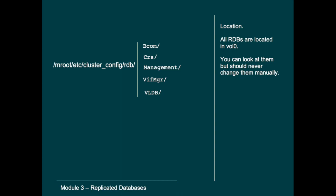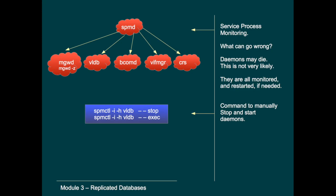The number of updates and transactions are also shown with this command. The RDB files are located in vol0 in the directory /mroot/etc/cluster/config/rdb, and each RDB has its own subdirectory with the name of the RDB itself — vldb, vif_manager, crs, management, and bcom. You should never edit any of these files directly.